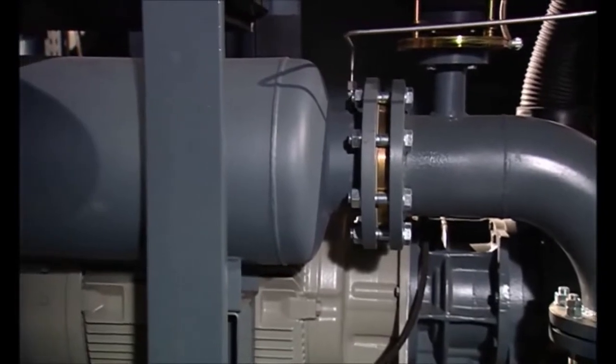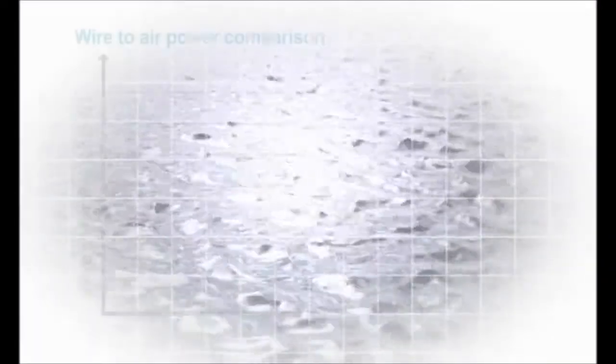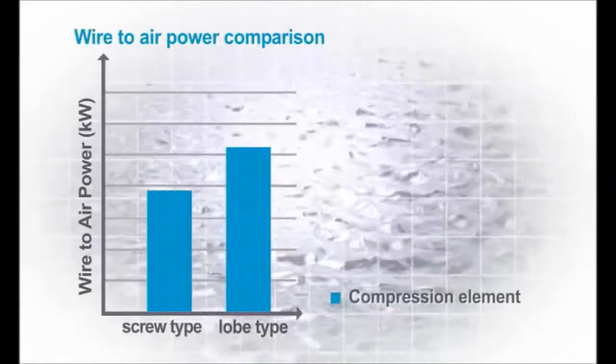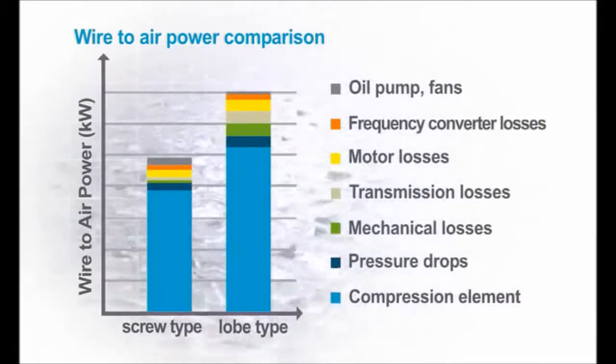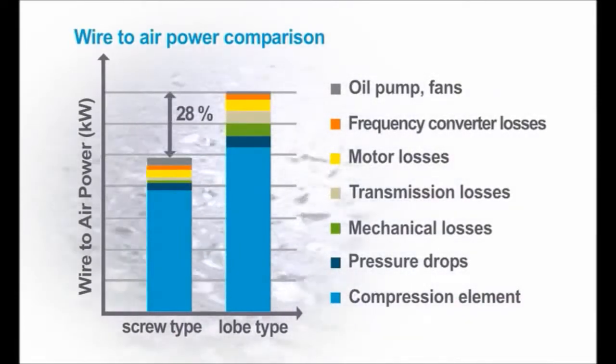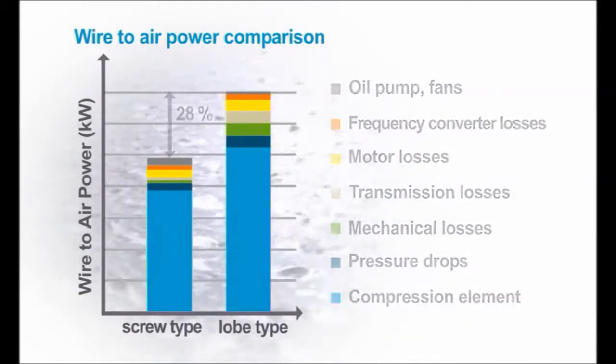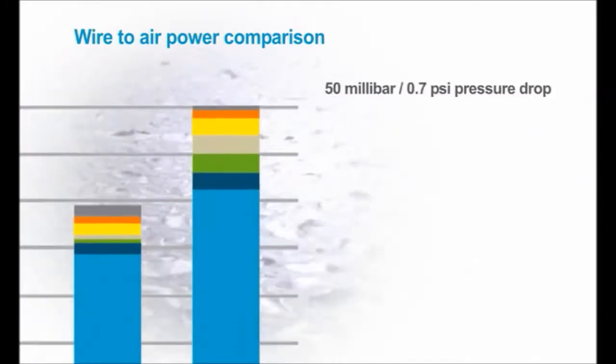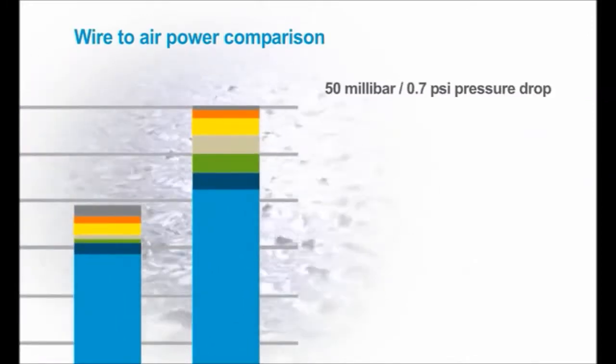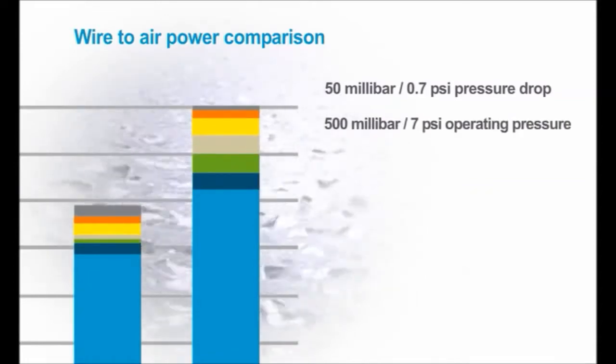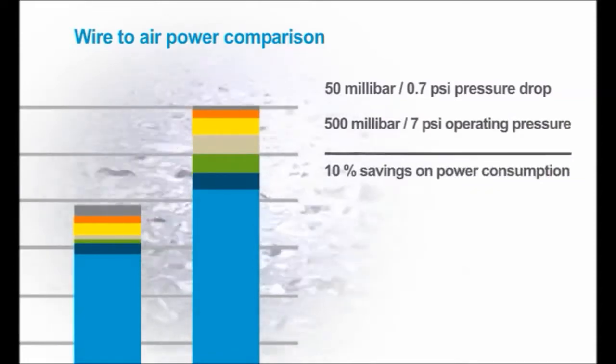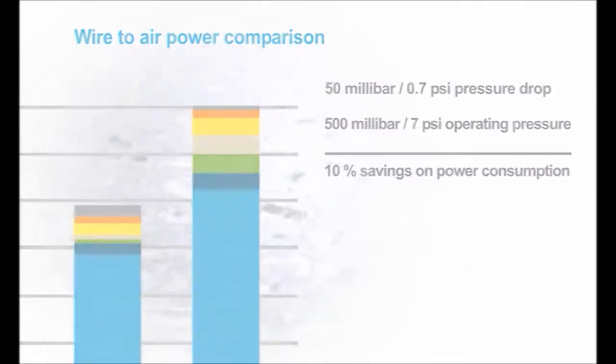A true wire to air comparison has to take into account all possible power losses that can occur in a blower. That's why Atlas Copco includes all the losses in the blower package. For example, a 50 millibar or 0.7 psi pressure drop may appear small, but when a blower is only producing 500 millibar or 7 psi, this adds up to 10 percent of the power consumption.